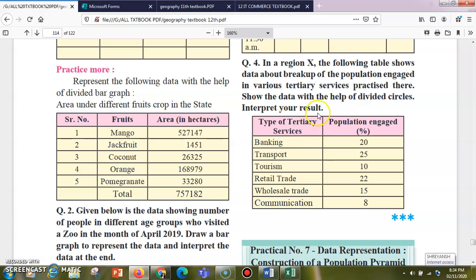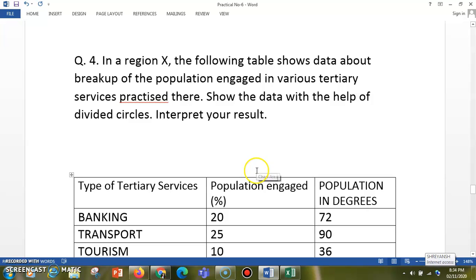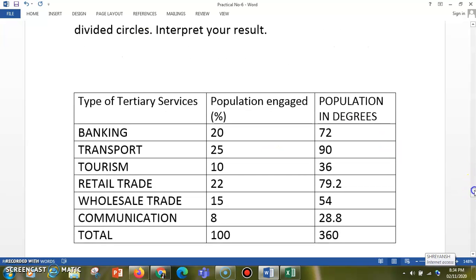We have this question here. The population engaged in tertiary services is given in percentage format and we need to present it in the form of a divided circle. In the case of a divided circle, you have to convert these things into degrees.